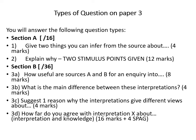In a moment I'm going to go through one question at a time. Section B of the exam paper is worth 36 marks, and the focus of section B will all be on the same element of the course, as it involves using sources and interpretations. Question 3A asks 'how useful are sources A and B for an inquiry into' — worth eight marks. 3B asks 'what is the main difference between interpretations one and two', and 3C asks you to suggest one reason why the interpretations give different views.